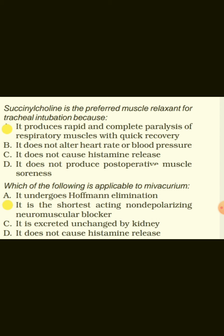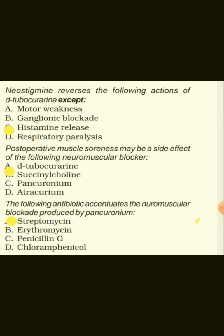Succinylcholine is the preferred muscle relaxant for tracheal intubation because it produces rapid and complete paralysis of respiratory muscles with quick recovery. Mivacurium is the shortest acting non-depolarizing neuromuscular blocker. Neostigmine reverses the actions of D-tubocurarine except histamine release; it does reverse motor weakness, ganglionic blockade, and respiratory paralysis. Post-operative muscle soreness may be a side effect of succinylcholine.